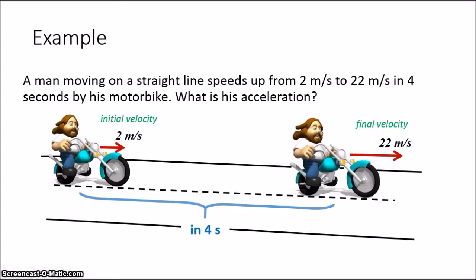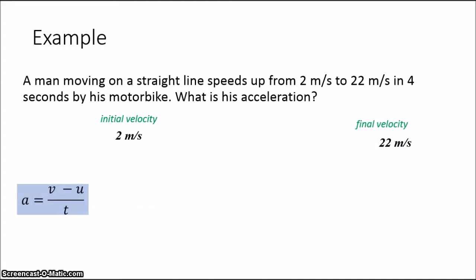Let's use our formula to answer this question. So, here, V represents the final velocity, and U represents the initial velocity, and T is the time. If we do this calculation, we can find the acceleration as 5 meters per second squared.